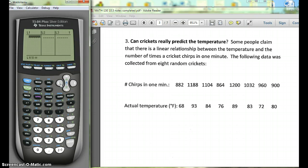So in L1 we're going to put the chirps per minute: 882, 1188, 1104, 864, 1200, 1032, 960, and 900.